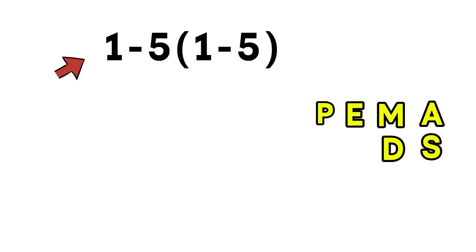So according to PEMDAS, the order is very clear. First the parentheses, then the multiplication, and finally the subtraction. If we subtract before multiplying, the whole answer becomes wrong.